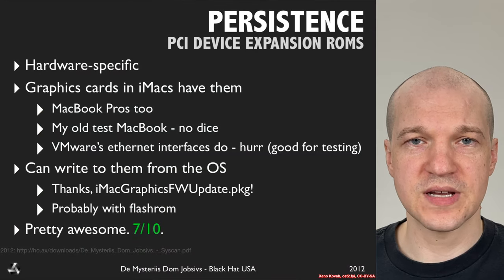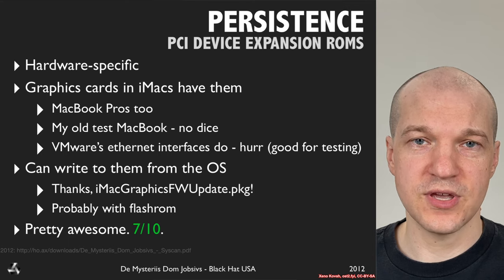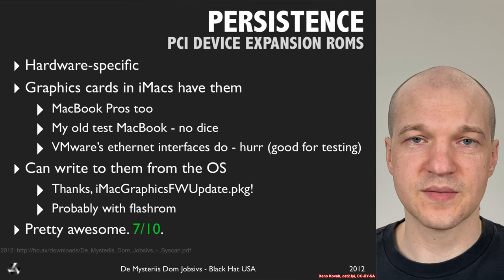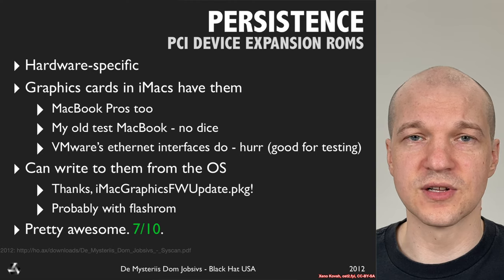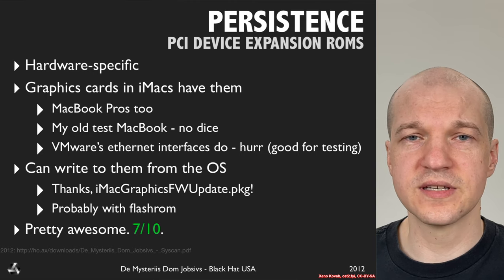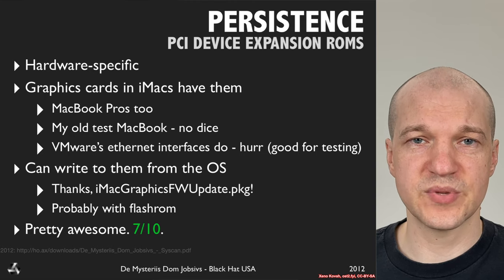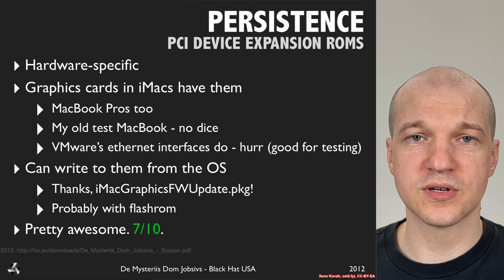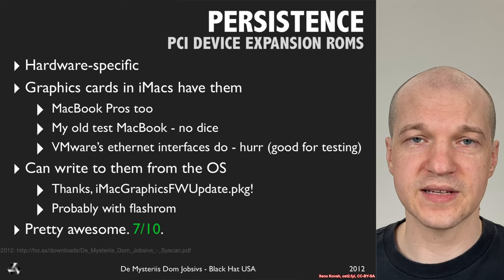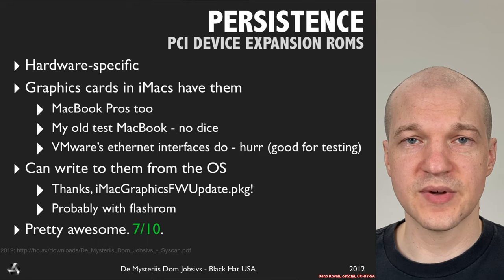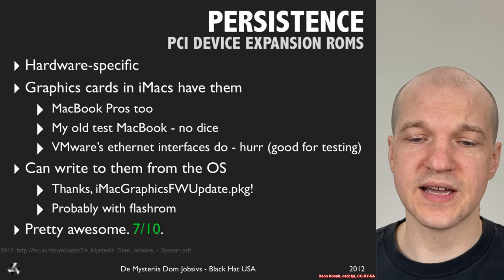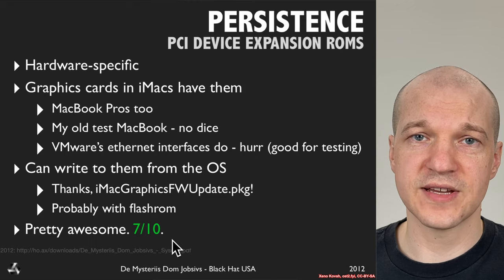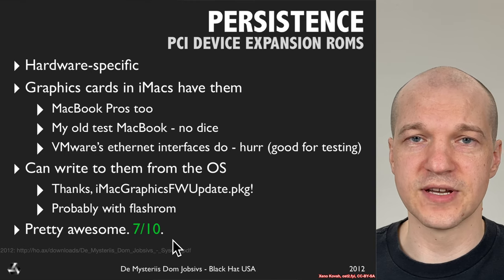In 2012, Snare looked at how he could use Option-ROMs to infect Mac systems — specifically their kernel. In this talk, he covered normal bootkit-type attacks where you infect the bootloader and hop your way into the kernel, Option-ROM attacks to do the same thing, and EFI attacks. Basically, while Option-ROM was 7 out of 10, EFI attacks were 11 out of 10.